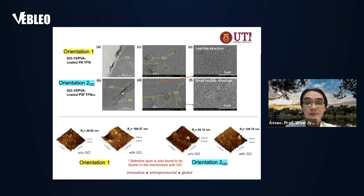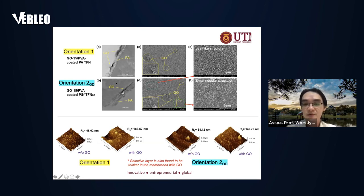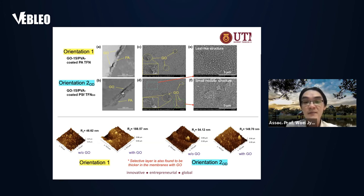We also characterized the membranes using TEM at high resolution magnification. For orientation 1, you can see the graphene oxide appearing on top of the polyamide layers. For orientation 2 OD, graphene oxide is sandwiched between the polyamide layer and the substrate. The surface morphology of both membranes shows that graphene oxide can be detected. Some people may question that particles still accumulate, but the coating layer is not exactly the same as the polyamide layer — the polyamide layer is synthesized separately. This is why even though you have small accumulation on the surface, it will not really affect the polyamide layer properties, which is confirmed by the high NaCl rejection shown in the previous slide.